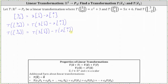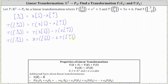Now we can use the second property and factor out the three and the two on the right. The transformation of the vector (3, negative 2) is equal to three times the transformation of the vector (1, 0), minus two times the transformation of the vector (0, 1). And we know the transformation of the vector (1, 0) and the transformation of the vector (0, 1).